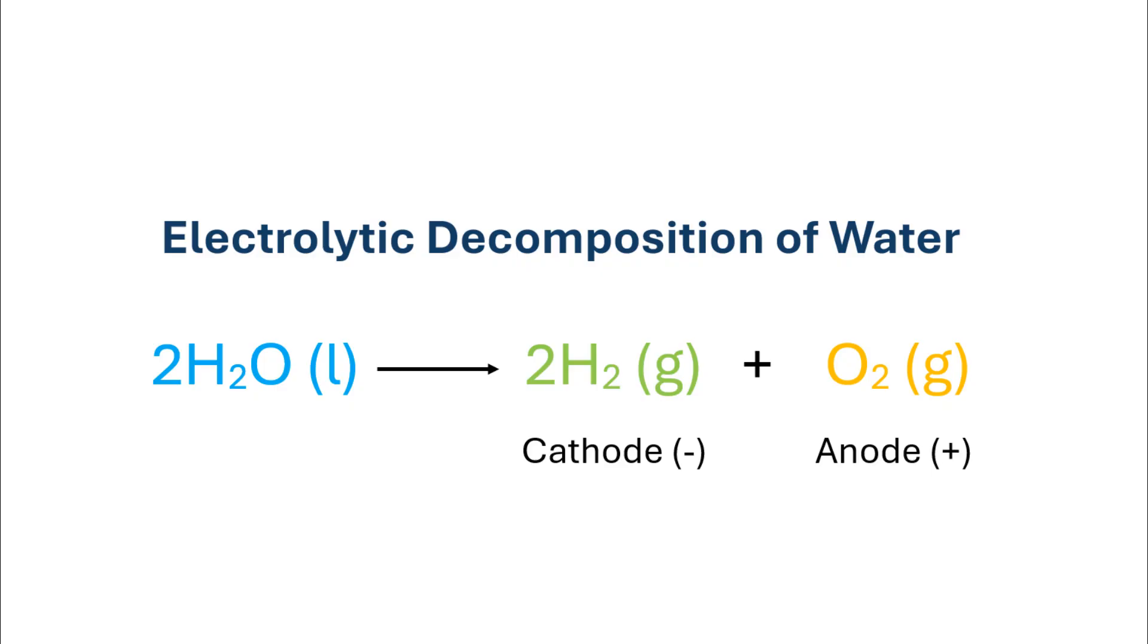The gas collected in the anode tube is oxygen gas released from the decomposition of water. Oxygen being a supporter of combustion causes the glowing splint to burn with a bright flame.